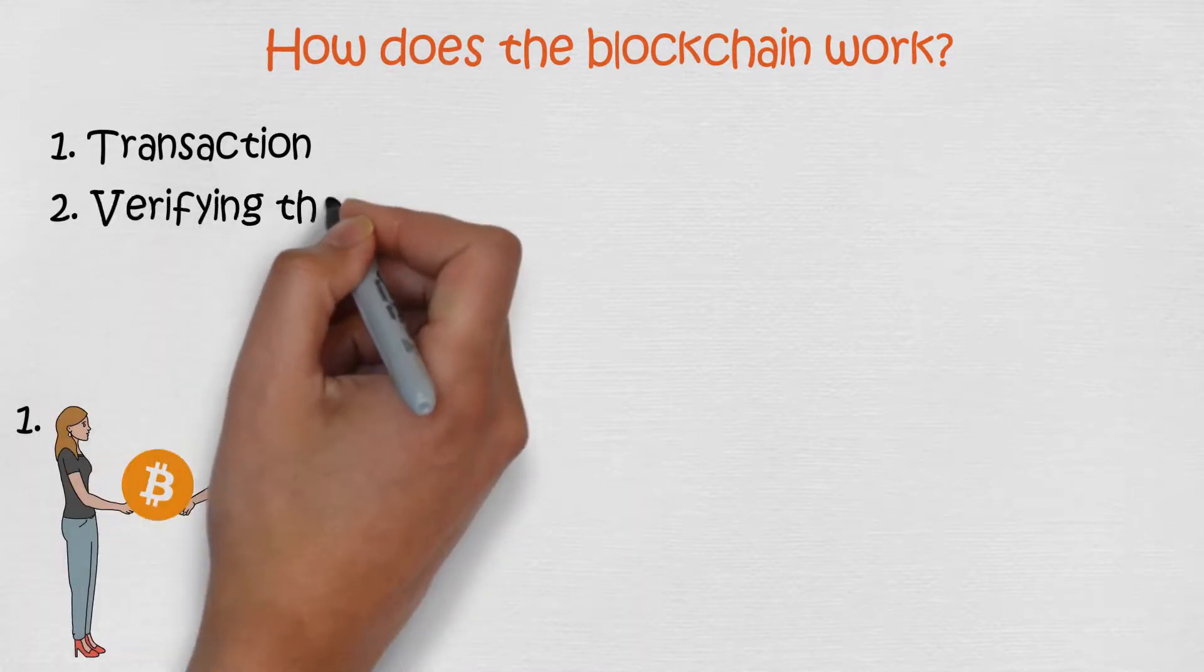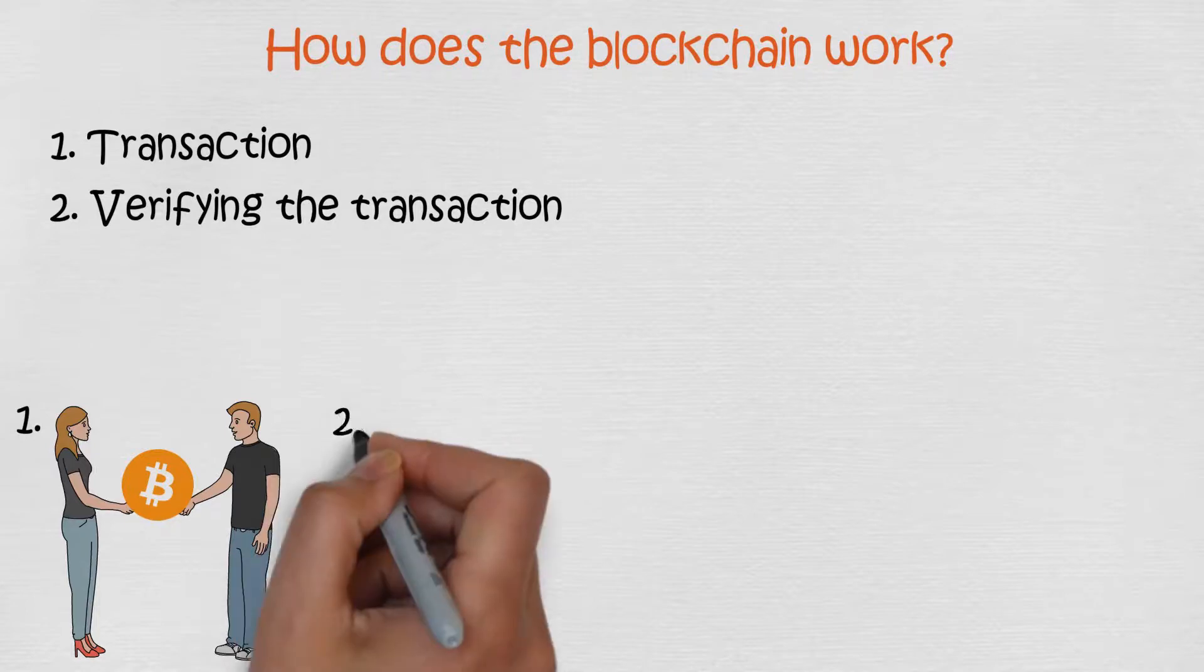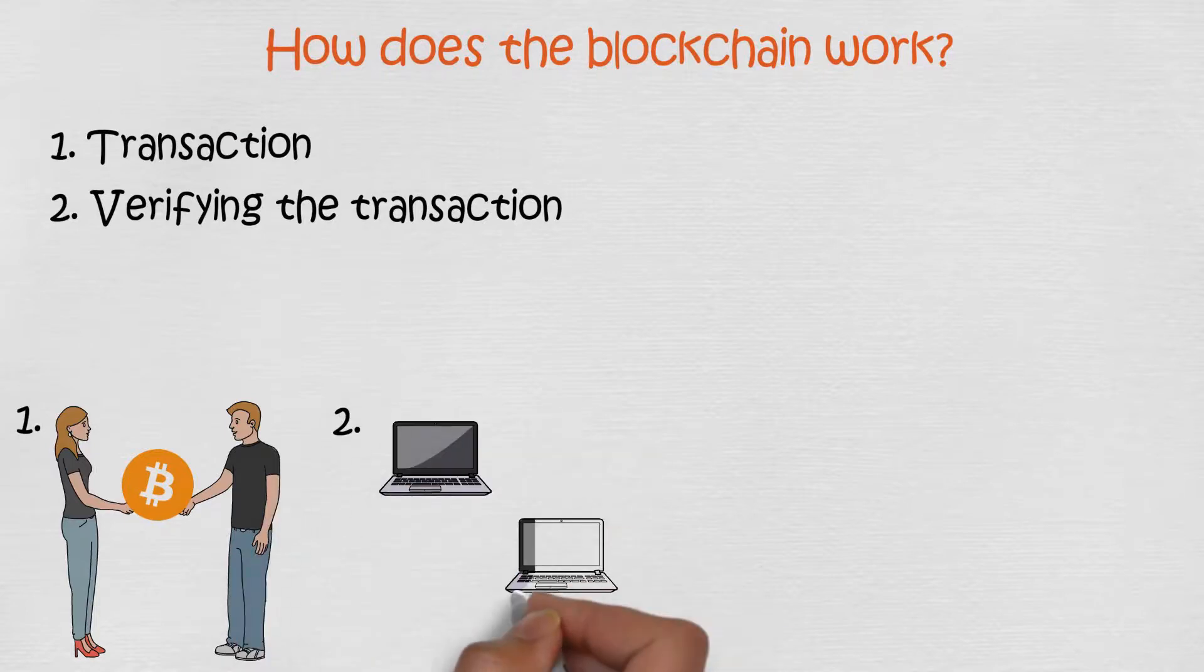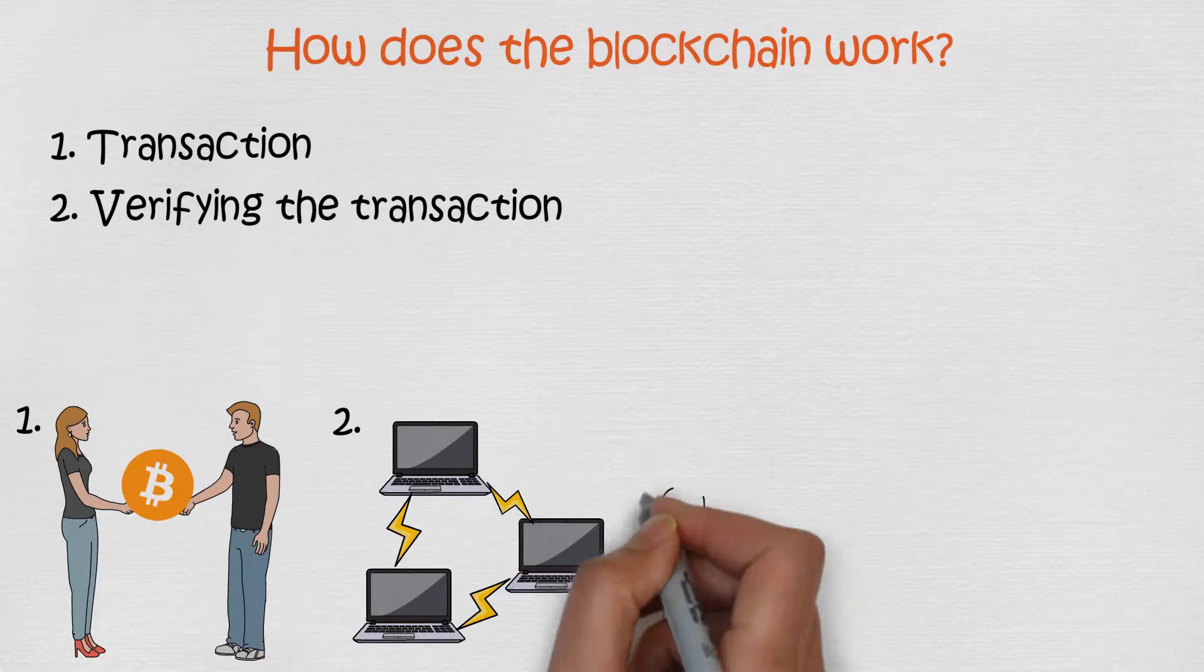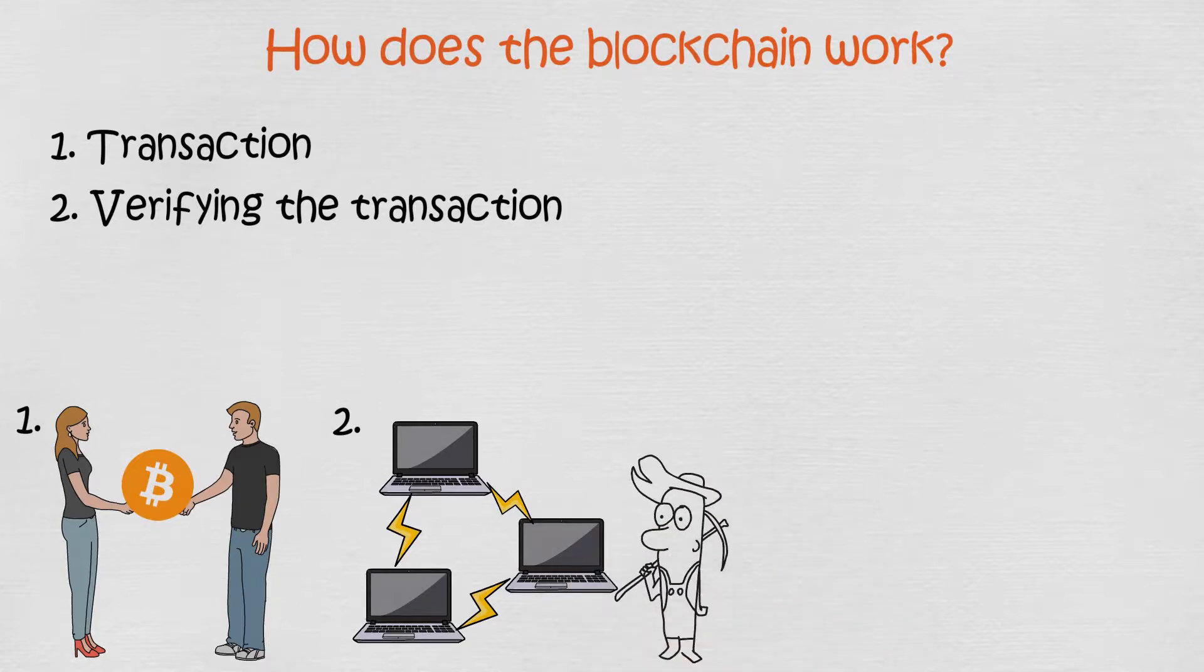After that, the transaction needs to be verified. With Bitcoin, verifying a block takes about 10 minutes. The transaction is verified with a network of computers. Because of this, the information is in a public database that everybody has access to. This verifying process is called mining. More about mining will be in the next episode of the series.